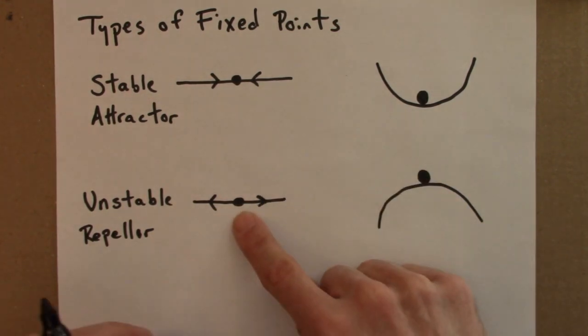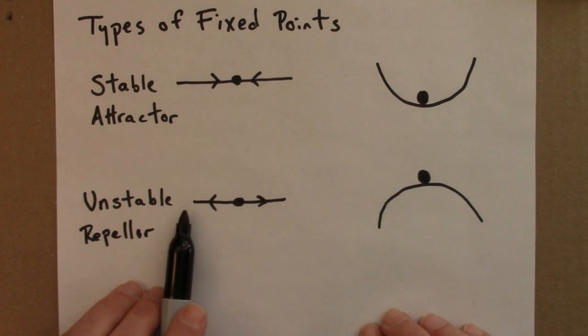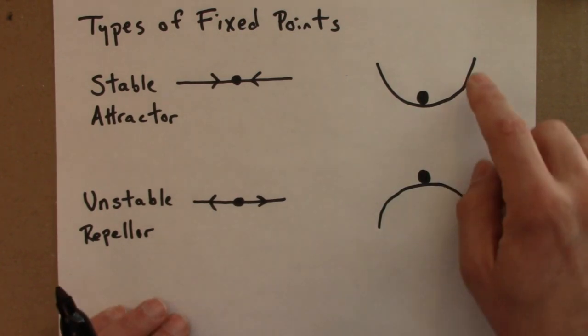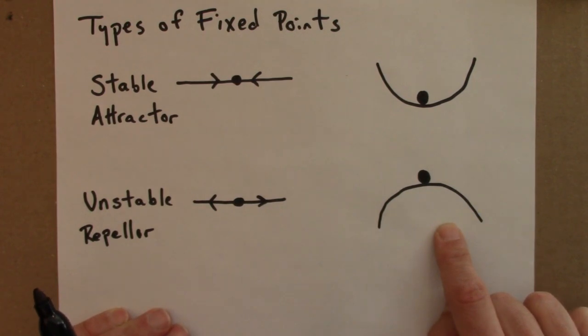So that's the same thing that's showing here. This point is fixed, but if we move a little bit to the right or a little bit to the left, we'll get pushed away, not to return. So this picture is for a stable fixed point and this for an unstable fixed point.